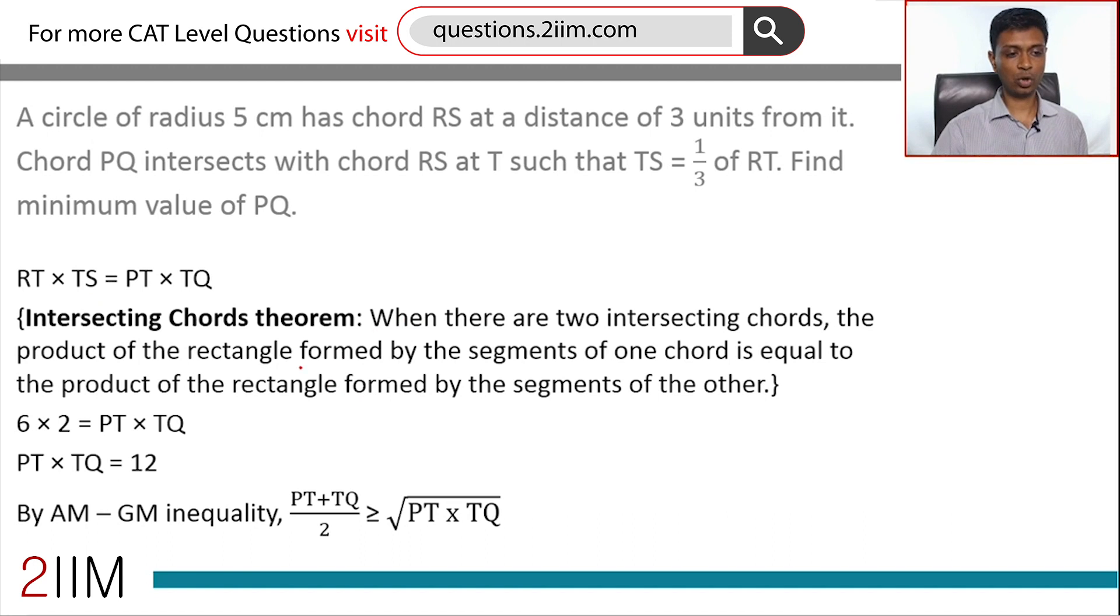Intersecting chords theorem: when two chords intersect, if AB and CD intersect at O, then AO times OB equals CO times OD. So 6 into 2 is PT into TQ, or PT into TQ is 12.